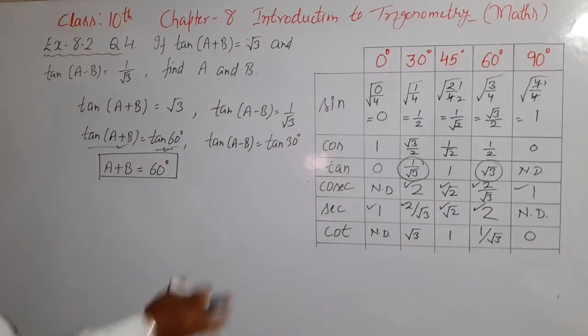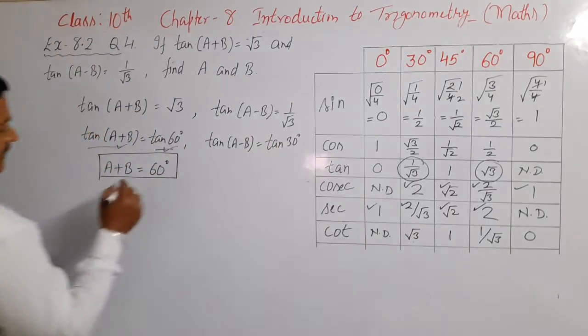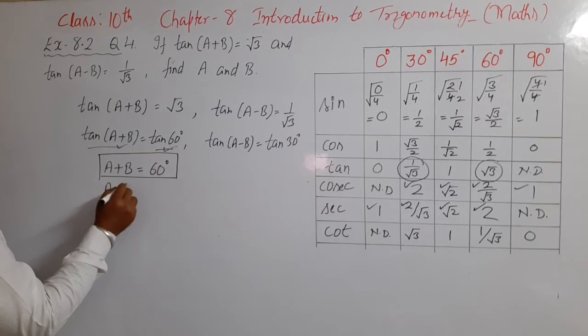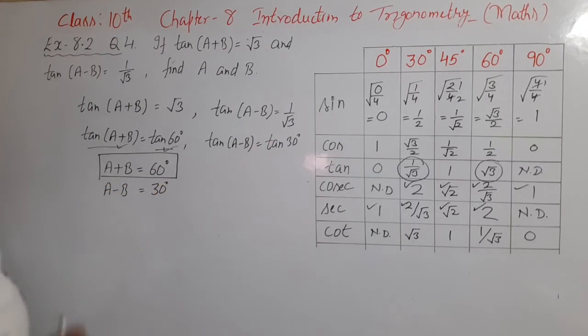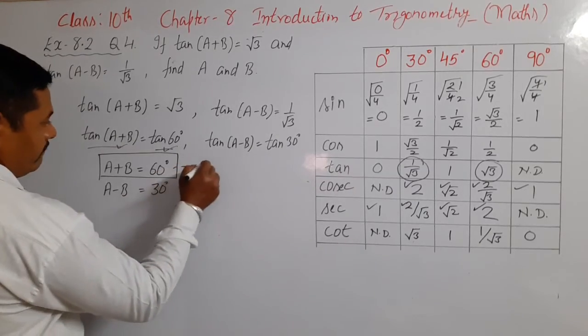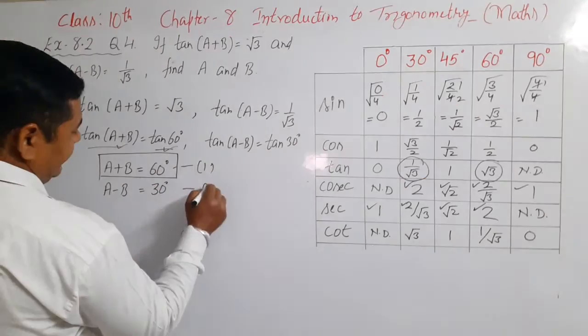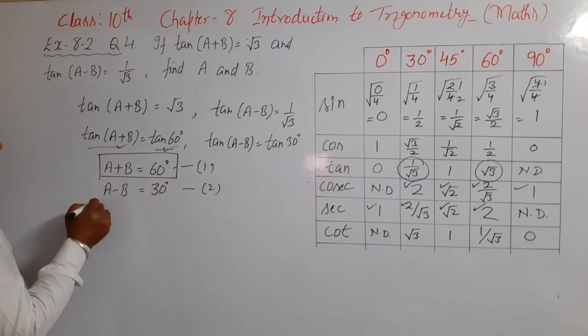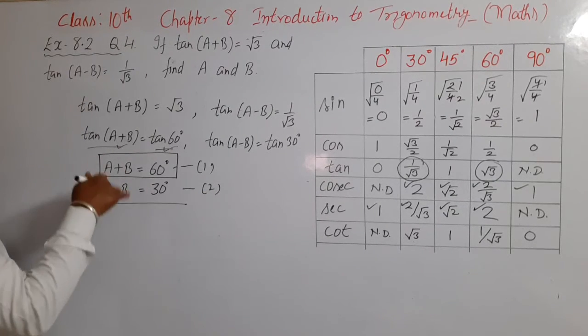So again, now I can say that A minus B is equal to 30 degree on comparing. Now I have pair of linear equations in two variables. This is first equation and this is second equation. Now I have pair of linear equations in two variables.